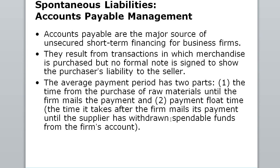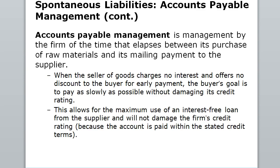When we look at the average payment period, it has two parts: the time from the purchase of raw materials until the firm mails the payment, and the payment flow time — the time after the firm mails its payment until the supplier has withdrawn spendable funds. The supplier sells raw materials, another company receives the invoice, and hopefully within 30 to 60 days pays the supplier. This is business-to-business — B2B.